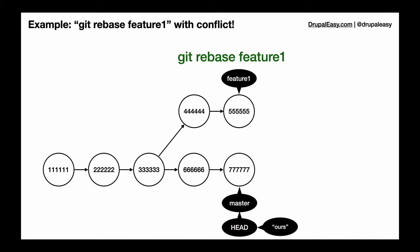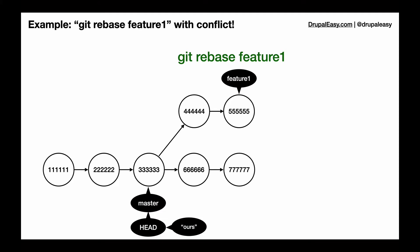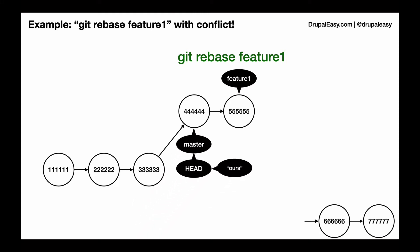We're on master and we issue the git rebase feature one command. In a rebase, what actually happens is git replays the timeline back to the point where the two branches diverged, then it takes those two commits off temporarily and starts moving the playback head forward along the feature one branch.